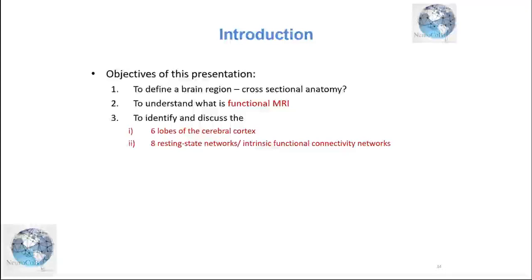Now we go into today's lecture more specifically. From today's first lecture, you will learn about different brain regions and the brain lobes involved, understand what functional MRI is, and know that there are fixed lobes of the cortex and eight resting state functional connectivity networks, which are the most important networks.